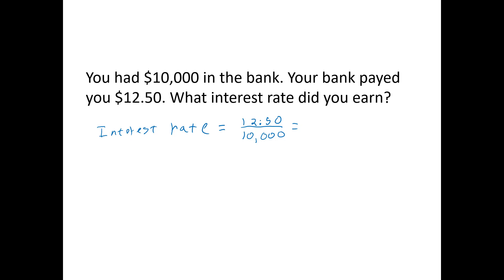This is just a matter of moving the decimal point. When you divide by 10,000, you move the decimal point over four places, so you need a couple of zeros. It moves over one, two, three, four places, giving you 0.00125. This becomes a percent by moving the decimal point two places to the right, giving 0.125%. Having your money in the bank does not give you a lot of interest right now — you're only getting 0.125 of a percent.